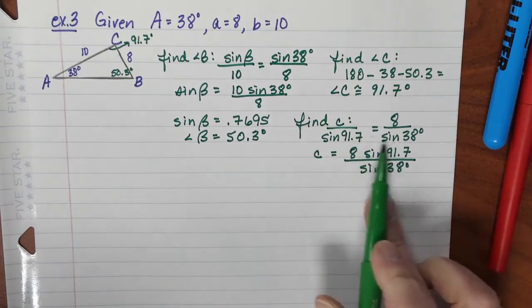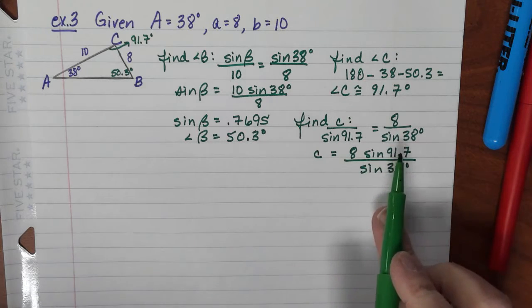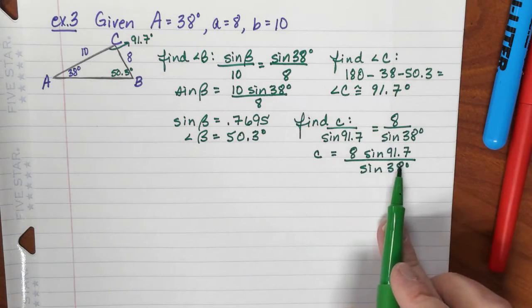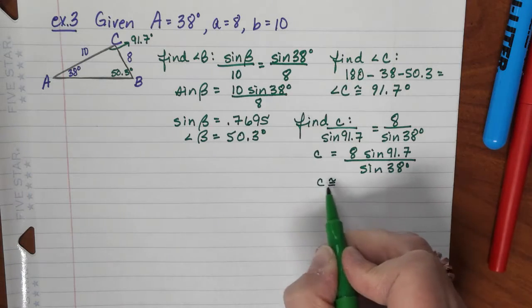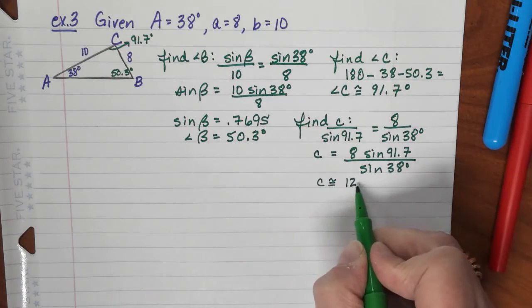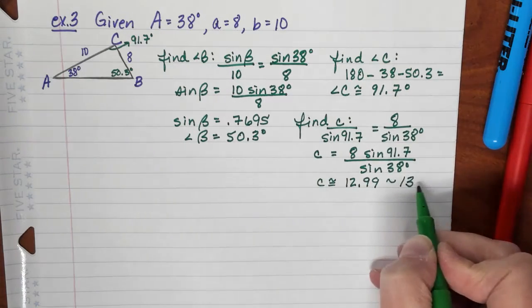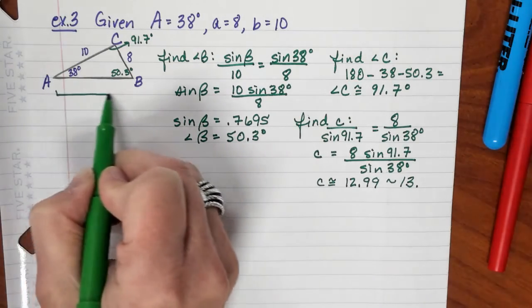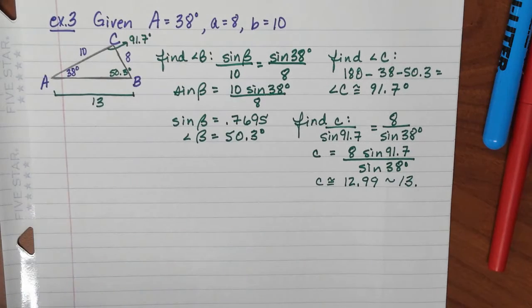Cross multiply, and so side C is equal to 8 times the sine of 91.7 divided by the sine of 38. And again, I told you, I know a lot of you are going to look at this ratio and just jump in right there and get the answers. Awesome, but I want to see the ratio. You're going to make sure you're in degree mode, you're watching your parentheses, and you're going to see that C is equal to about 12.99, which I'm even going to round to 13. So this whole thing right here is 13.